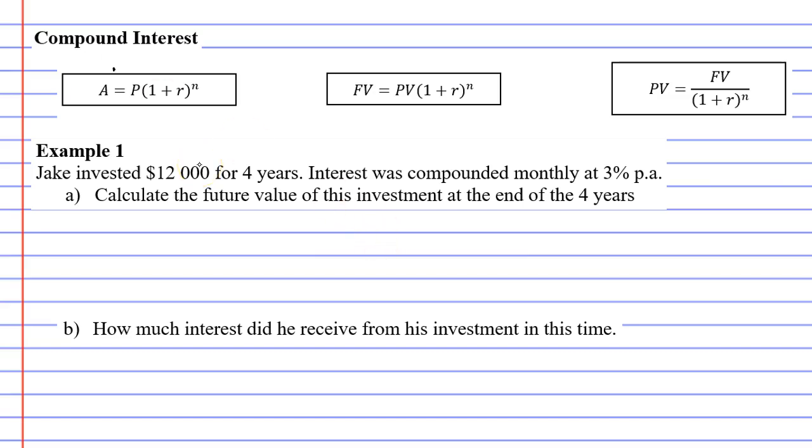The first thing we're going to do here is write the formula down. Future value equals present value times bracket 1 plus R, close bracket, to the power of N.